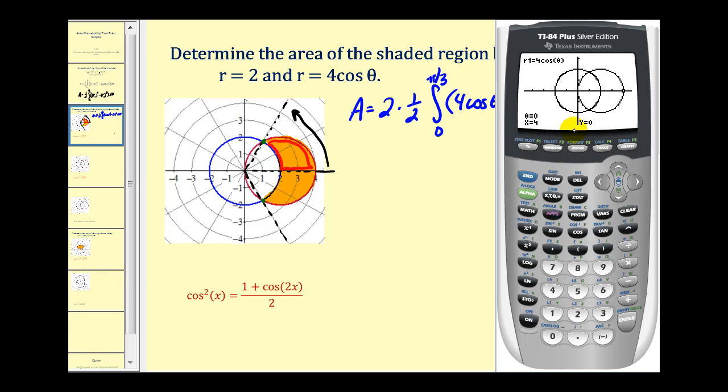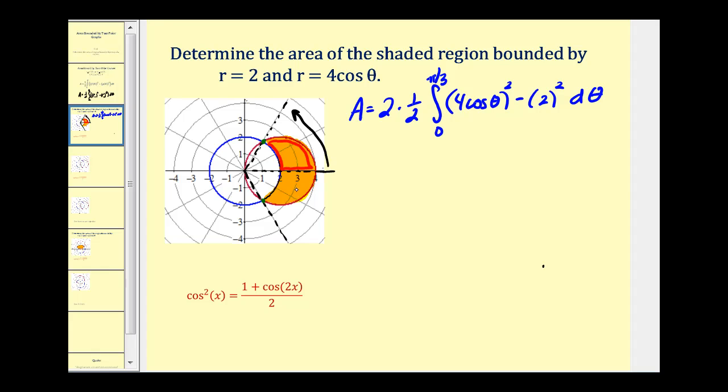Now if we press trace, we can see when theta is equal to zero, we're out here at this point, which corresponds to this point here. We just want to make sure this point of intersection here is pi over three or 60 degrees. So we can just press the right arrow and hold it down. And we can see right at 60 degrees or pi over three radians, we are where we thought we should be. Okay, let's go ahead and evaluate this definite integral to find the area of the shaded region.